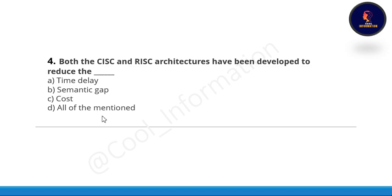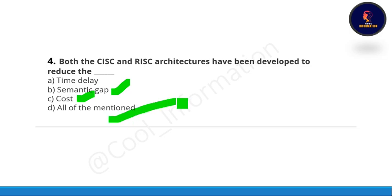Question number four: both the CISC and RISC architecture have been developed to reduce the — option A: time delay, option B: semantic gap, option C: cost, option D: all of the above. The correct option is option B, which is semantic gap.